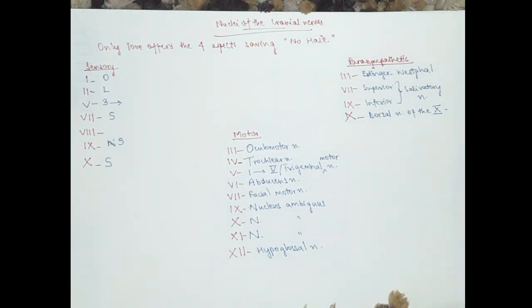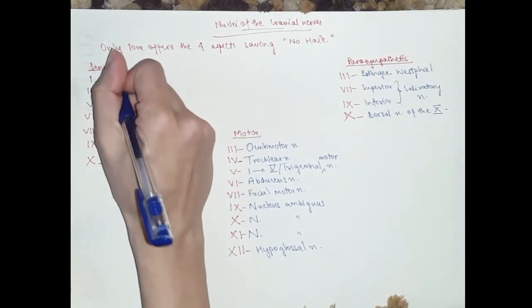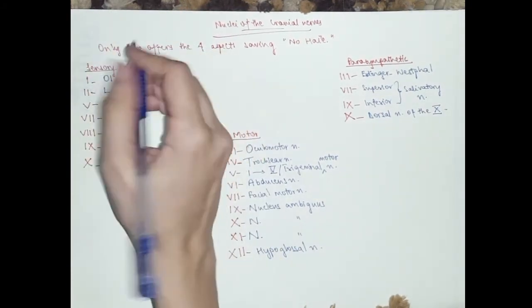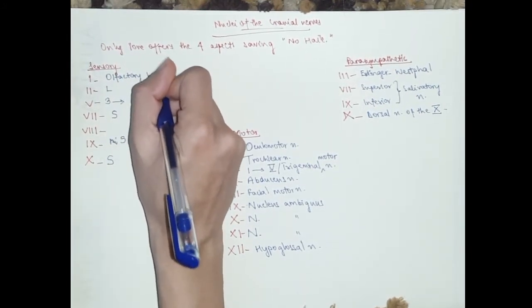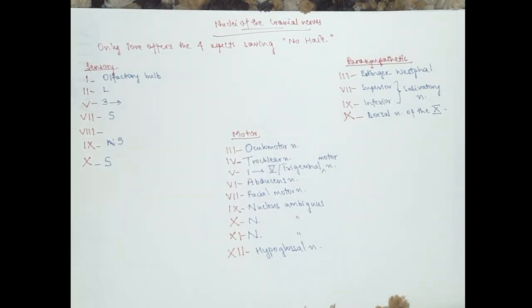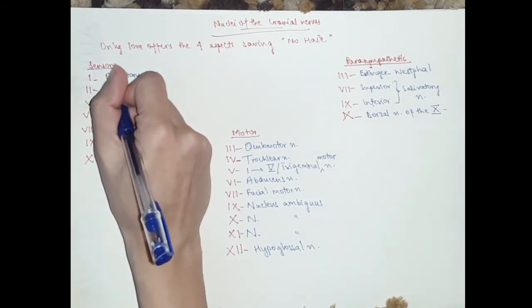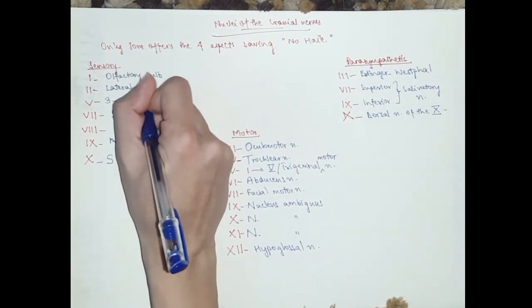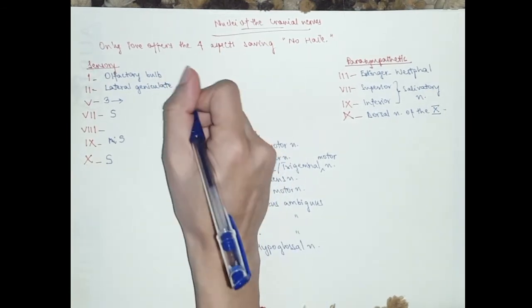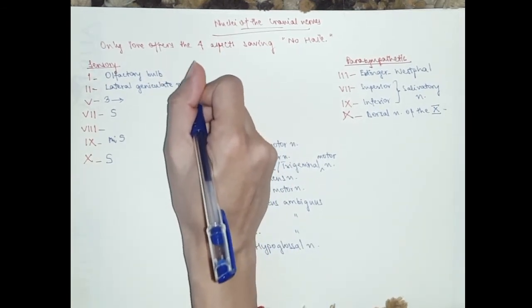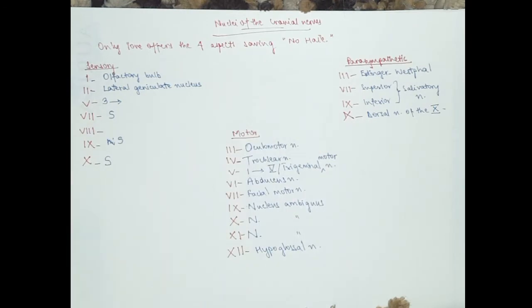Now we move on to sensory. It's got different names. The first one has not really got a nucleus, but it's got neurons in the olfactory bulb. The optic nerve also does not really have a nucleus, but it comes from the lateral geniculate nucleus, which comes from the superior colliculi, which is in the midbrain.